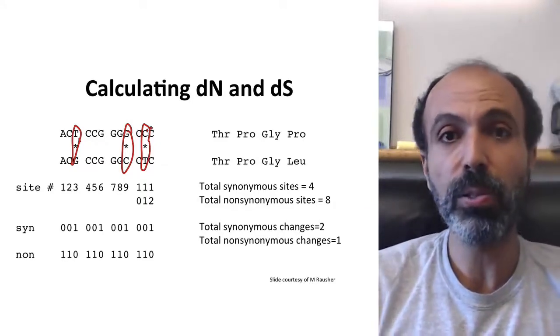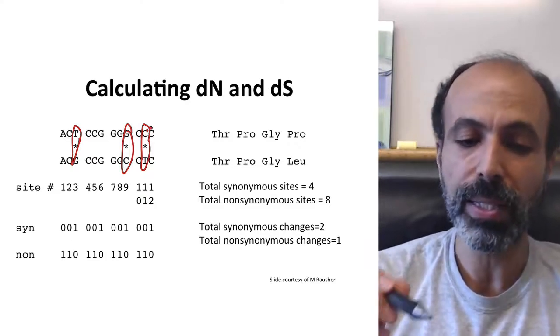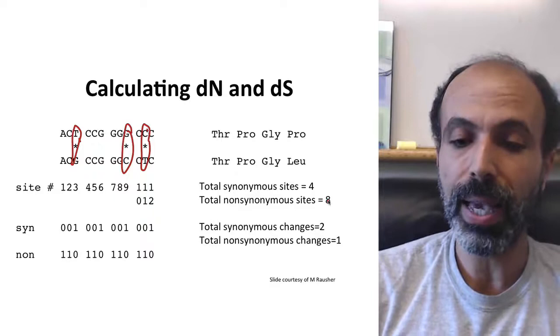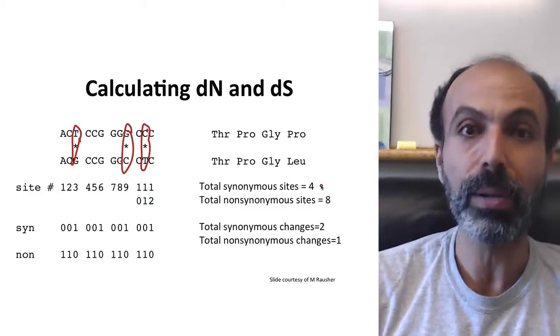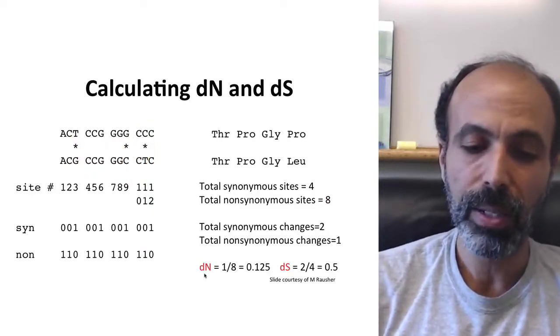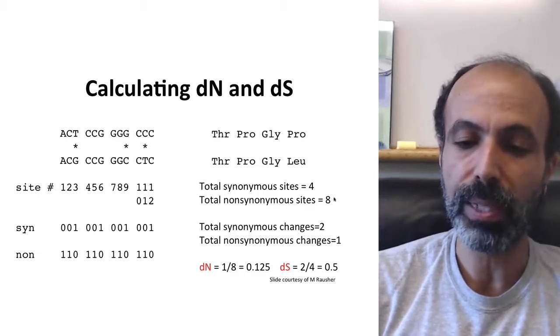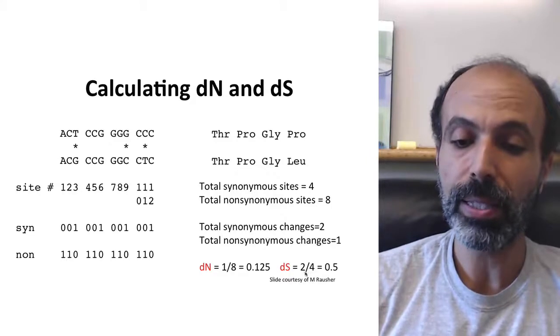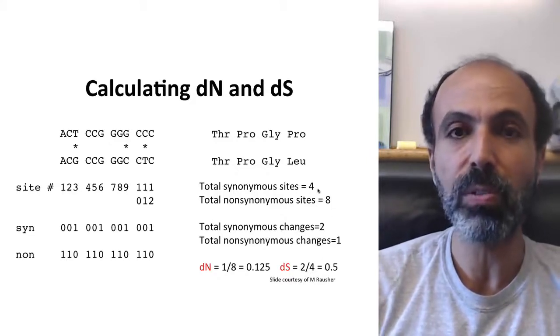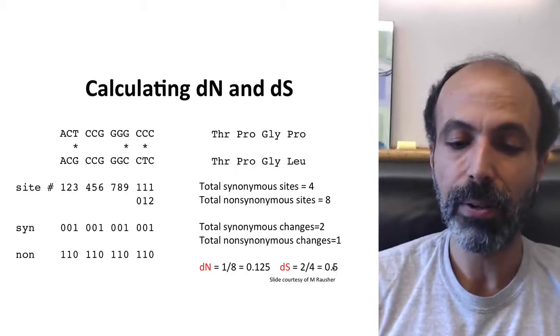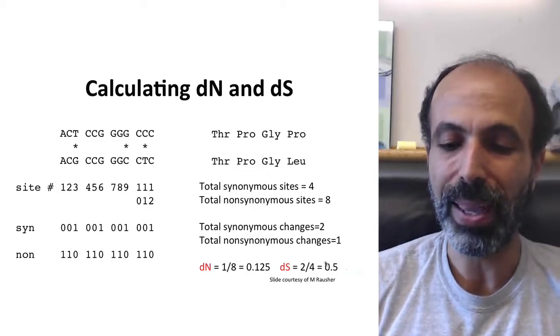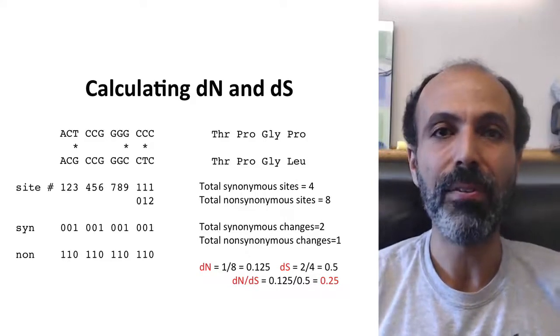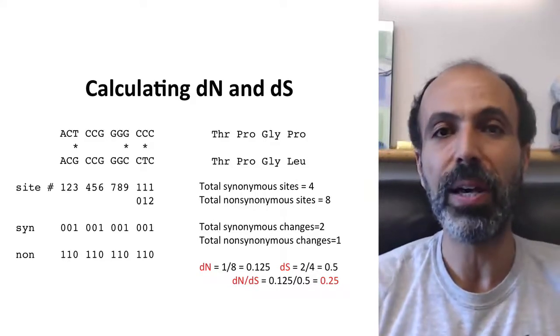Now what we want to do is we want dN over dS. dN is non-synonymous changes over non-synonymous sites. dS is synonymous changes over synonymous sites. So let's put those together. dN is non-synonymous changes, which is one, over non-synonymous sites, which is eight. So one-eighth or 0.125. dS is two out of four synonymous changes over synonymous sites, or 0.5. So dN/dS would just be this number divided by that number, which would be, in this case, 0.25, which is a fairly typical dN/dS value that you might find.